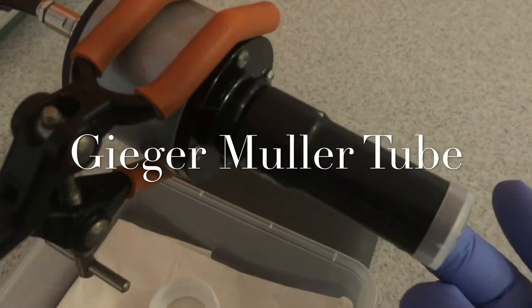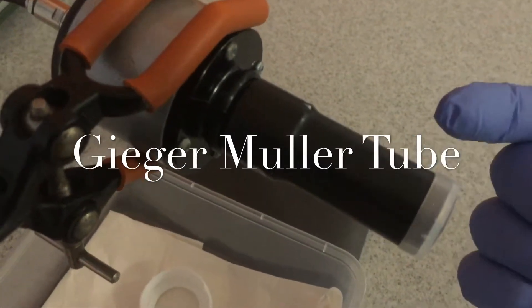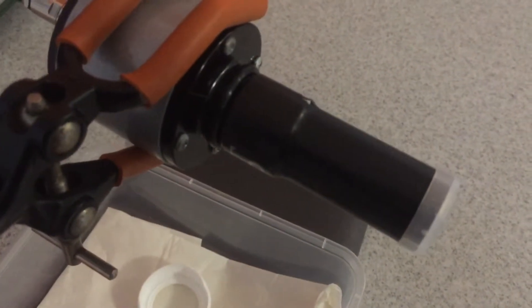This is a Geiger-Müller tube. It is used to measure the rate of discharge of radioactive particles from the protactinium.